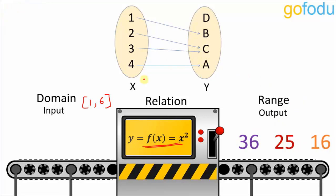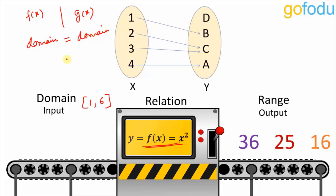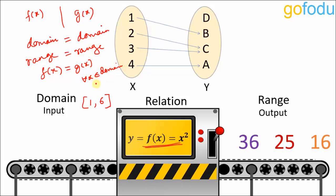If two functions f and g have their domains equal and their ranges equal, and f(x) = g(x) for all x in the domain, then the two functions f and g are said to be equal. These three conditions — equal domains, equal ranges, and f(x) = g(x) for all x — are the conditions for equality of two functions.